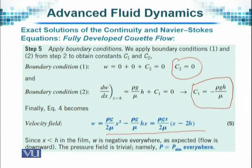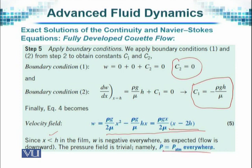Looking at the solution, w contains a square term. x is the length and it appears as x multiplied by the factor (x − 2h). The positivity or negativity of these terms affects the direction of the velocity component — what happens when x is greater than 2h versus less than 2h. However, the pressure term will simply be atmospheric pressure, so P will have a constant value P_atmospheric.